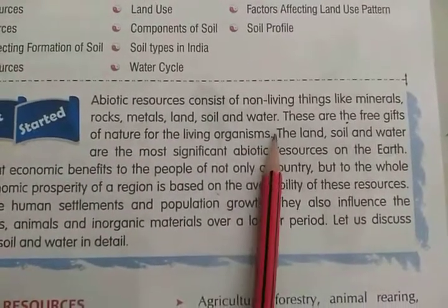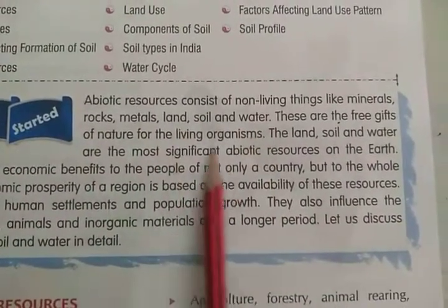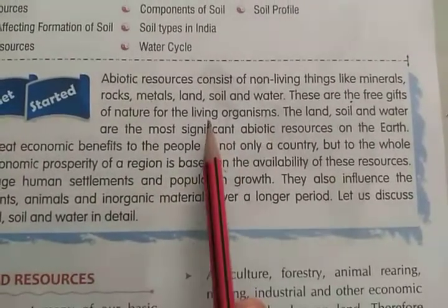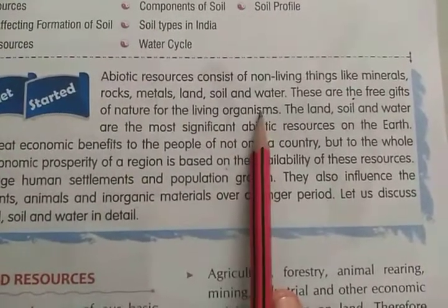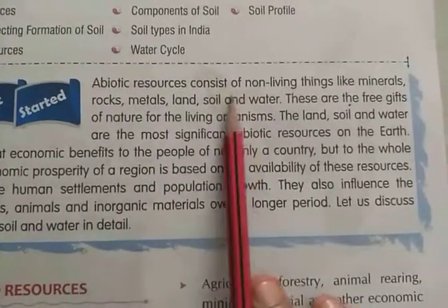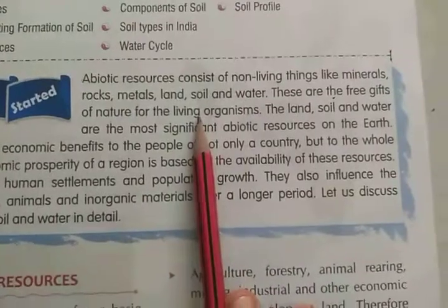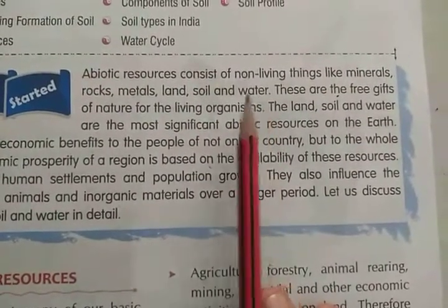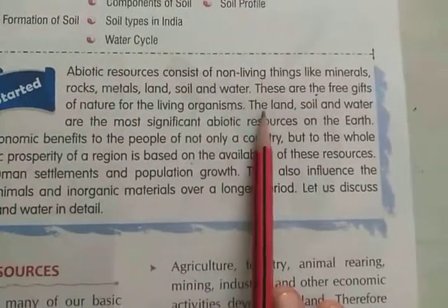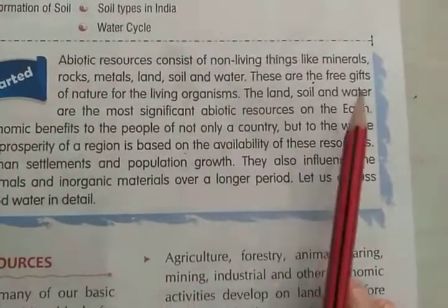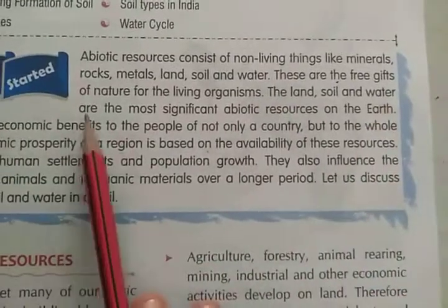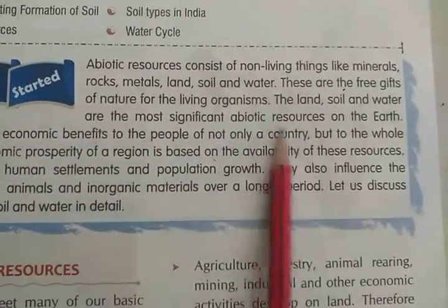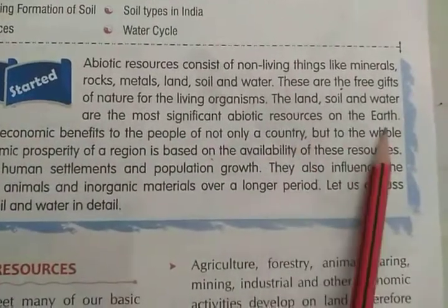Living organisms — humare sare jeet, sahajiv tantra ke liye, ye ek gift hain bhagwani ka, prakriti ka, humare liye ye sare gift hain. The land, soil and water are the most significant abiotic resources on earth.